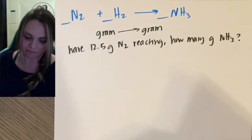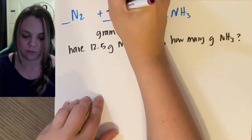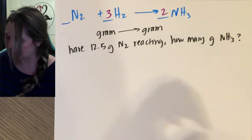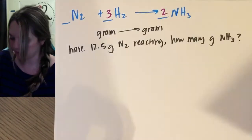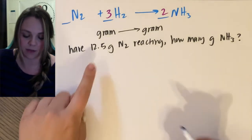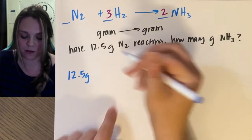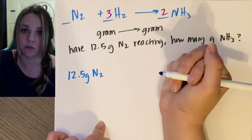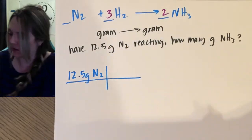If I have 12.5 grams of nitrogen reacting, how many grams of NH3 are produced? I'm abbreviating here, we'll make this shorter. Step one is balance. Done. Step two, start with your given. I'm given 12.5 grams of nitrogen, of N2. Remember nitrogen is diatomic N2. Cool.